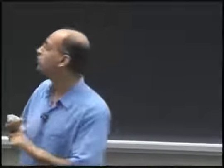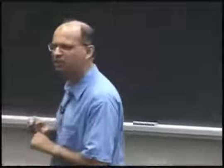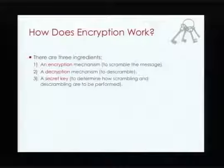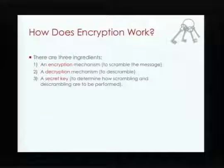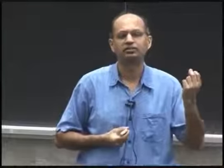Let me tell you how encryption works at a high level. There are three main ingredients: an encryption mechanism that scrambles messages, a decryption mechanism that de-scrambles messages, and a rule that tells you how to scramble and de-scramble — that's called a key.